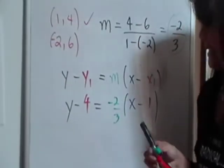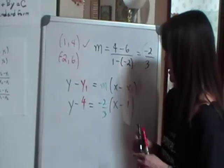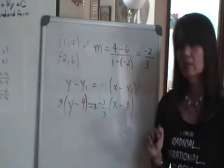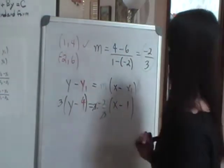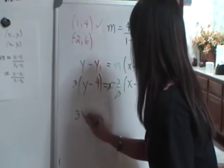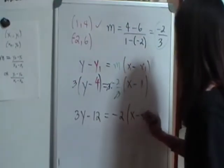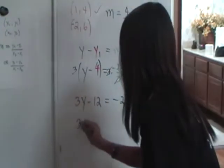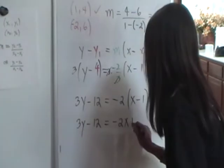All we have to do now is clean this up. While I see the fraction negative 2 thirds, what I can do is multiply both sides of the equation by 3 to clean this up. So over on the right side, the 3's will cancel, and on the left, we distribute the 3 to get 3y minus 12 equals negative 2 times the quantity x minus 1 on the right. Further cleaning this up, we get 3y minus 12 equals negative 2x plus 2.